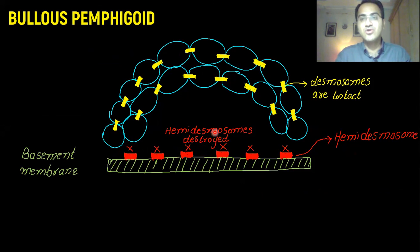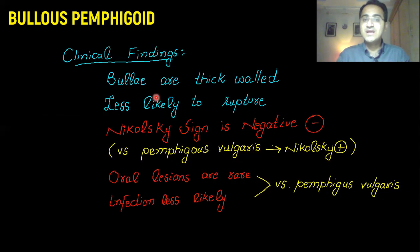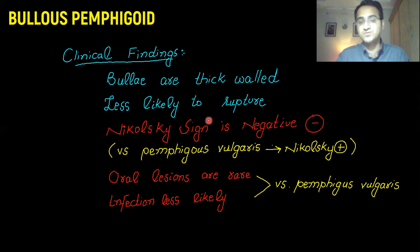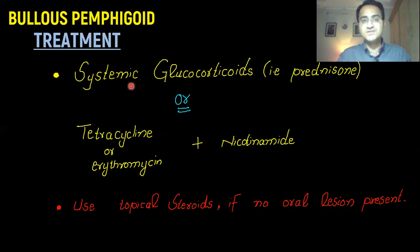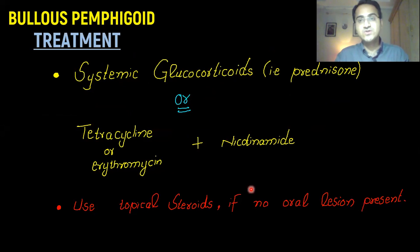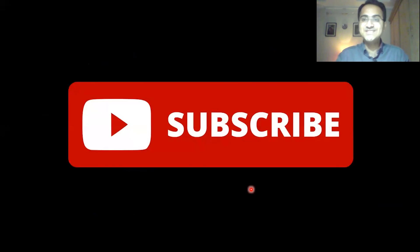In summary, bullous pemphigoid is an autoimmune disease in which hemidesmosomes are destroyed, leading to formation of blisters. Clinical findings include a negative Nikolski sign because the blisters are thick-walled and less likely to rupture. Diagnosis is made on biopsy or immunofluorescence, and treatment is with steroids — topical steroids can be used if no oral lesions are present.